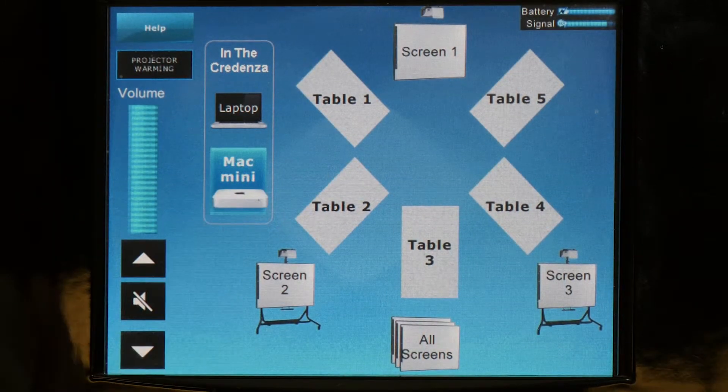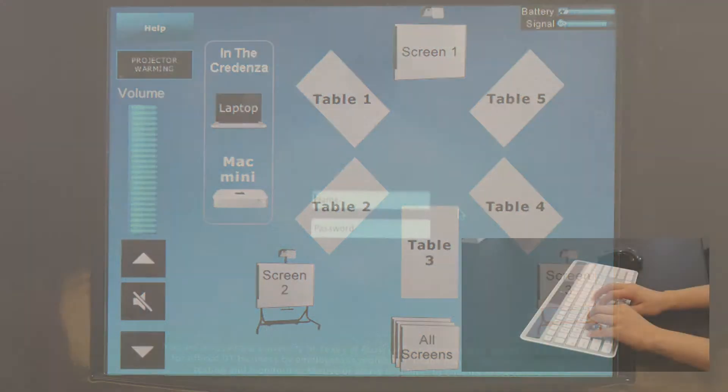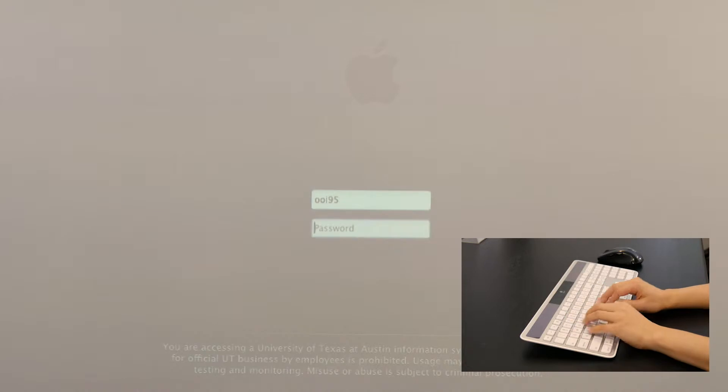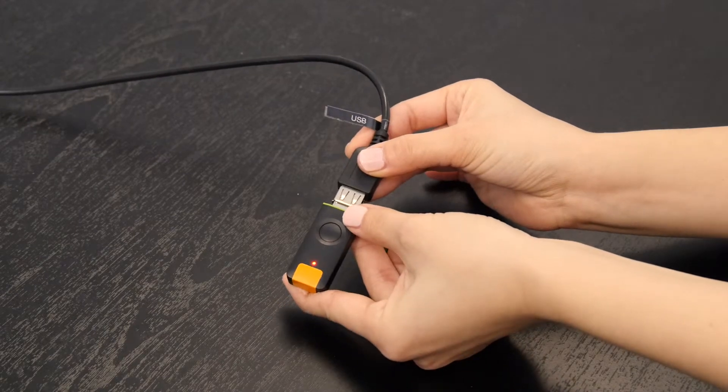First, turn on a screen or screens using the Crestron controller. Second, log into the Mac mini with your EID and password. Third, connect the Bluetooth adapter using the USB cable.